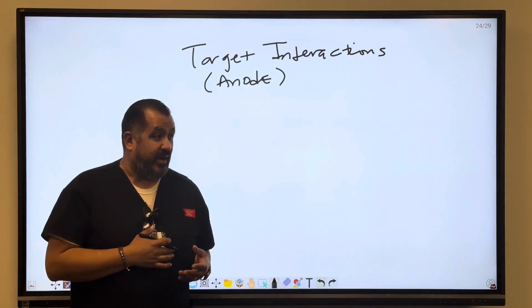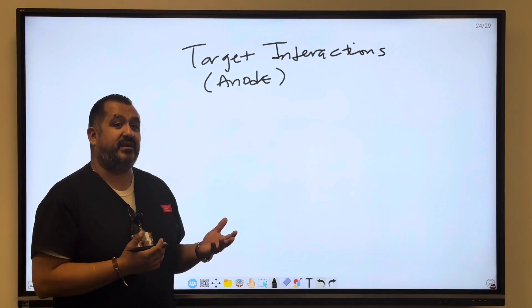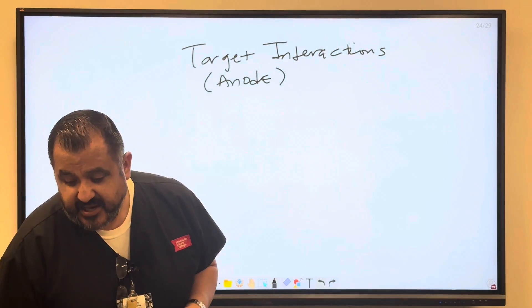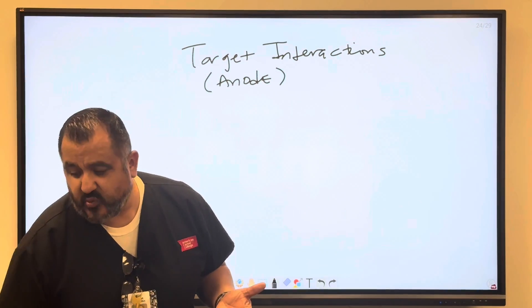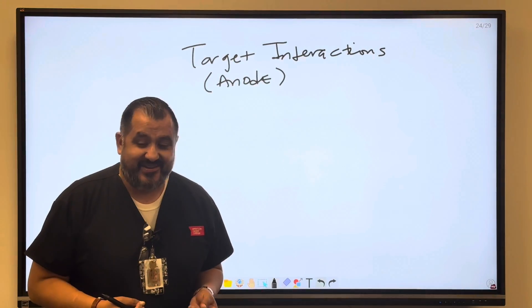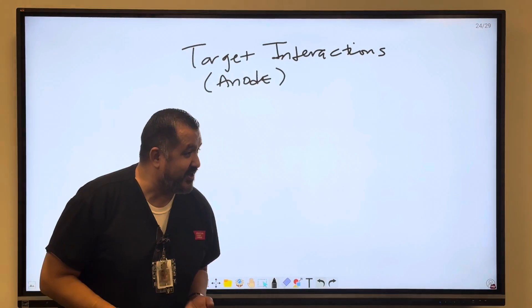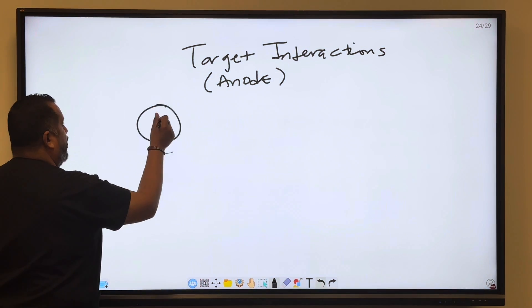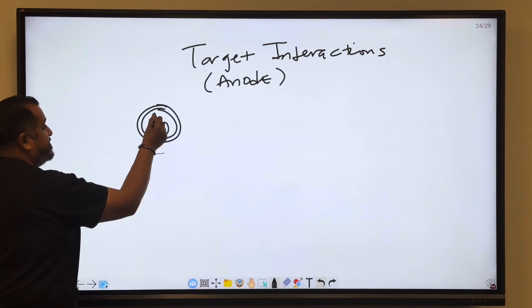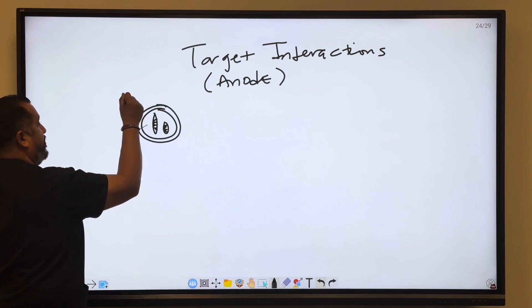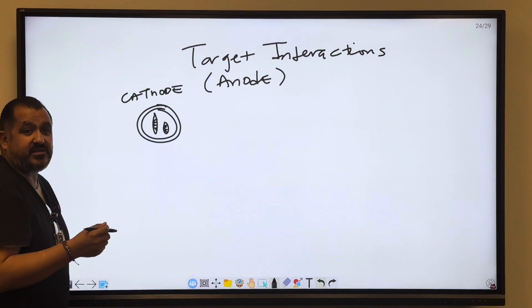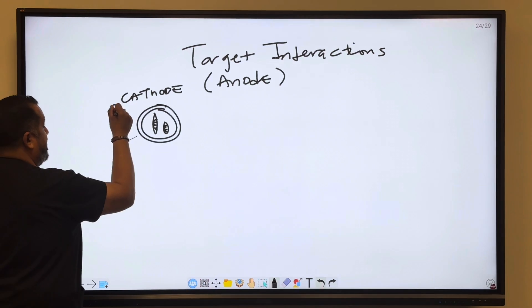So there's only two: bremsstrahlung and characteristic. You can find this in chapter 8 of the Principles book, pages 118-119. So we have bremsstrahlung and we have characteristic radiation. We're going to draw here a focusing cup, two filaments. This is a dual filament cathode. Now we know that the charge of the cathode is going to be negative.